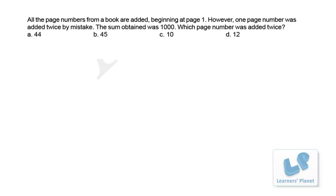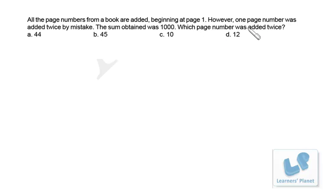Let's say this problem from the CAT paper 2002: all the page numbers from a book are added beginning at page 1. However, one page number was added twice by mistake, and the sum obtained was 1000. Which page number was added twice?